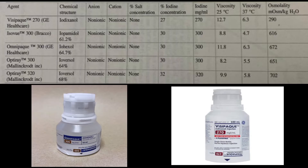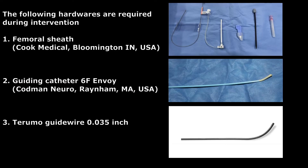For extracranial carotid arteriography, the injection rate is 3 to 4 ml per second for a total of 7 to 9 ml of contrast, imaged at 2 to 3 frames per second. For anterior intracranial cerebral angiography, the injection rate is 6 to 7 ml per second for a total of 10 ml, imaged at 2 to 4 frames per second. For vertebral arteriograms, the injection rate is 3 to 5 ml per second for a total of 8 ml, imaged at 2 to 4 frames per second.